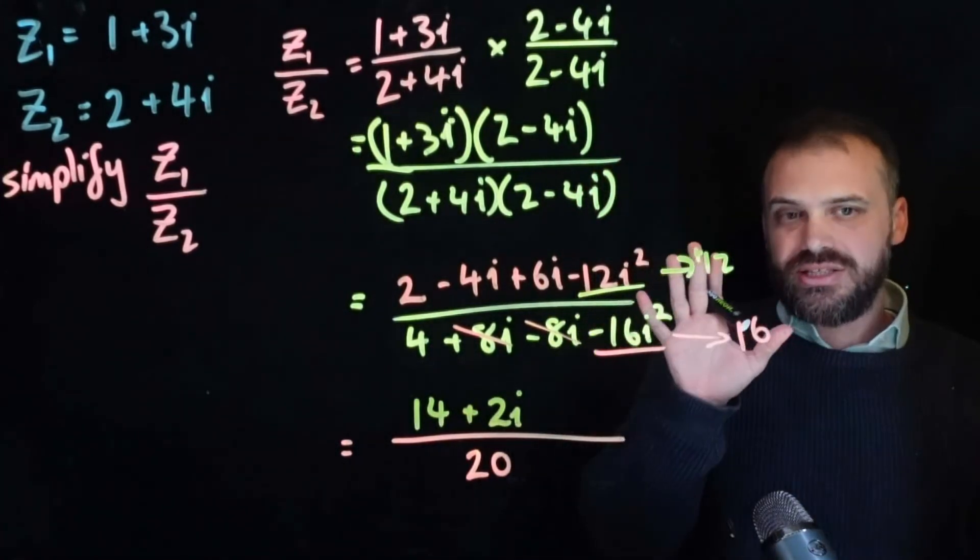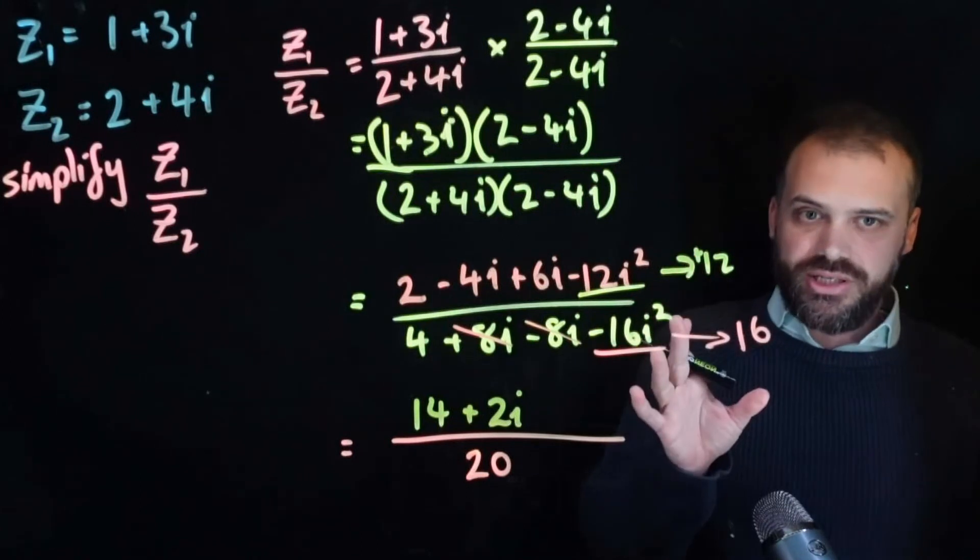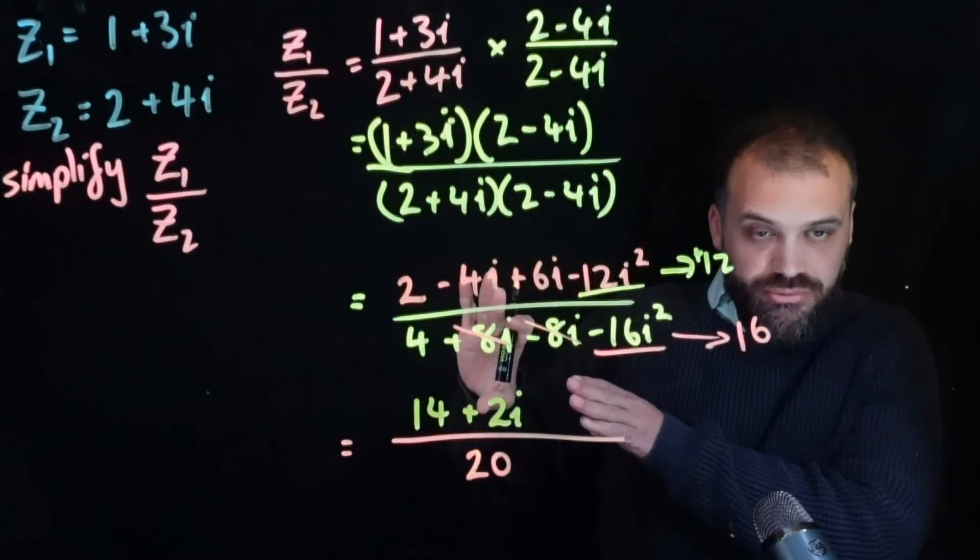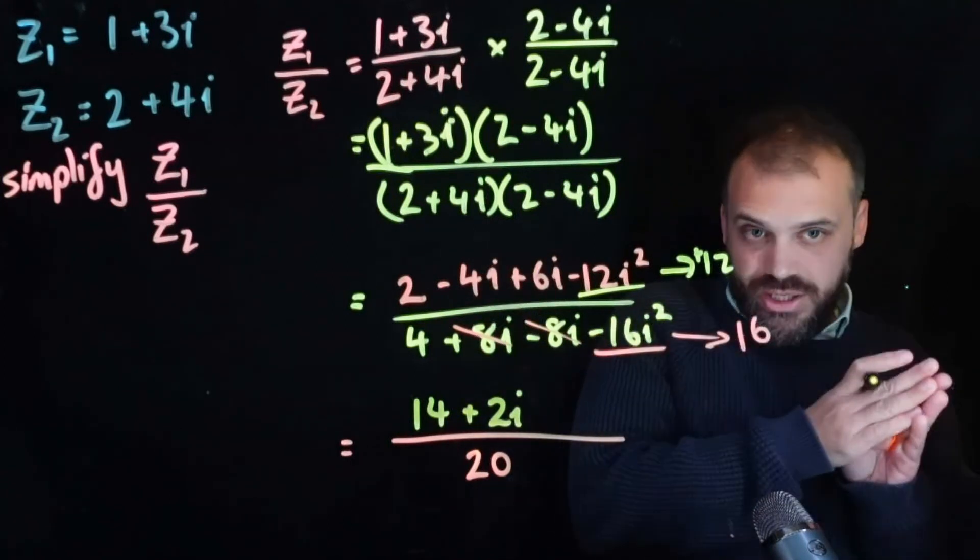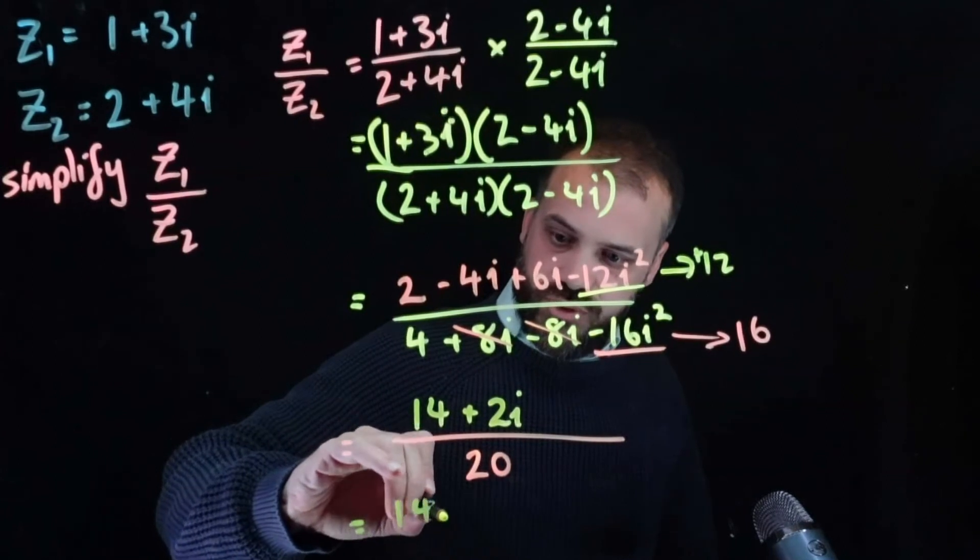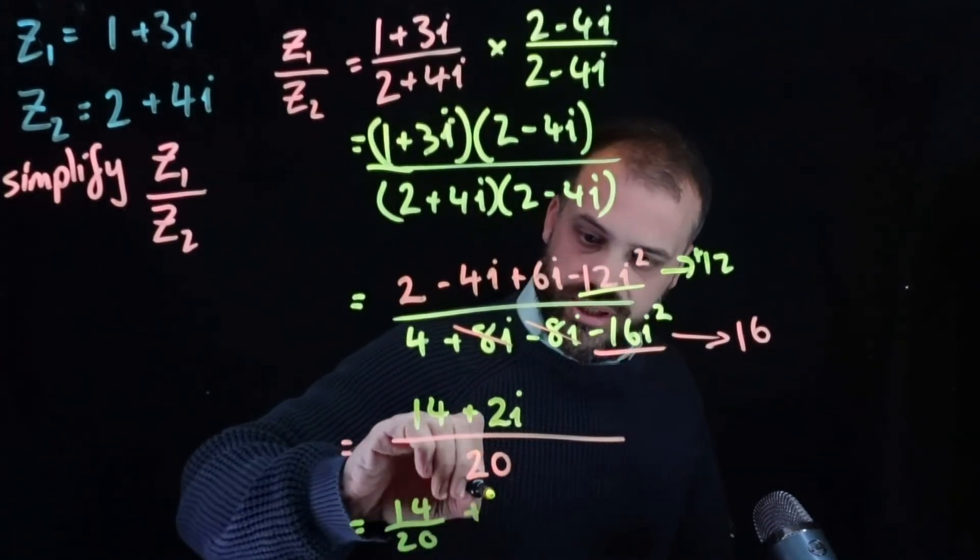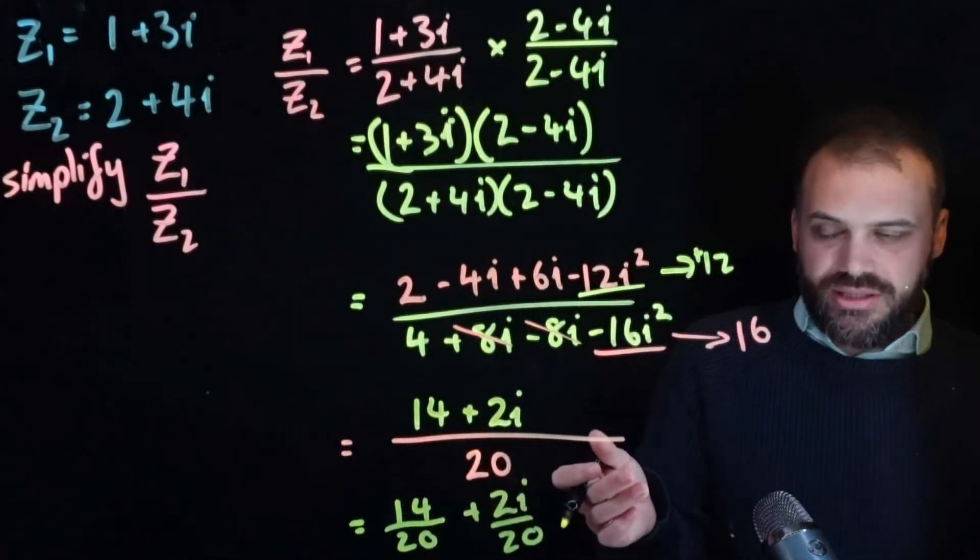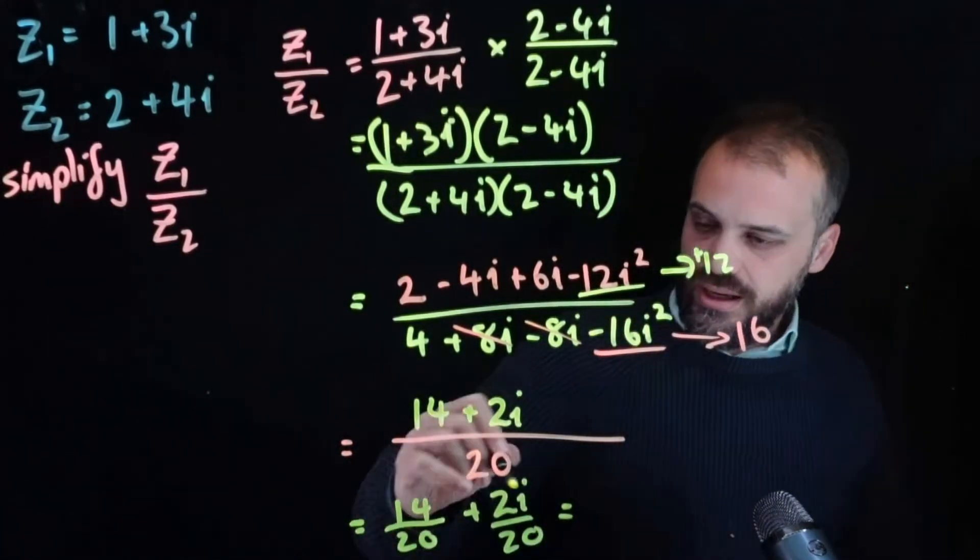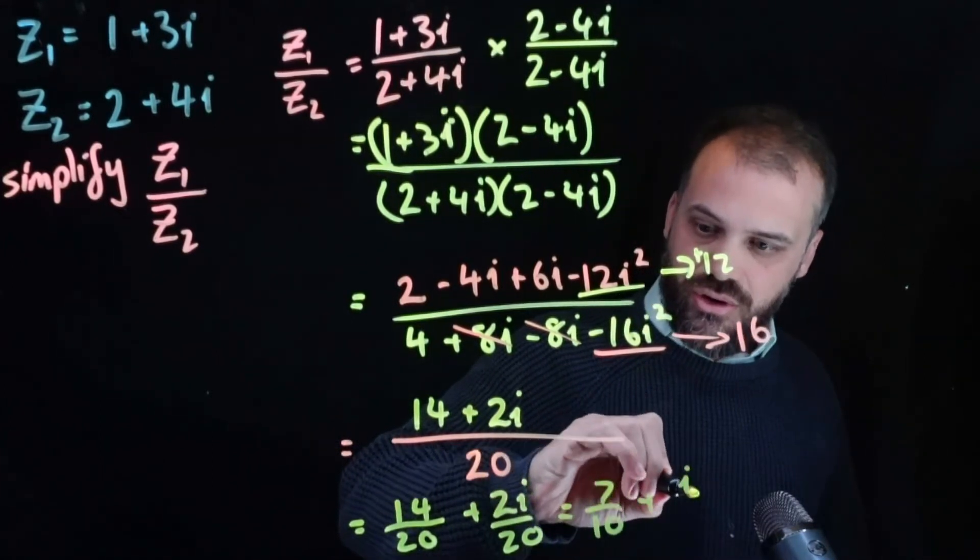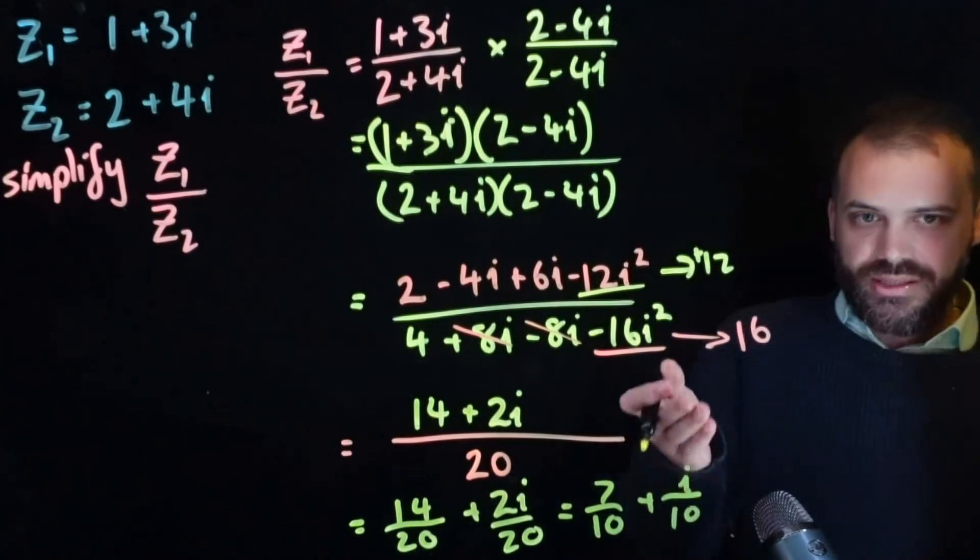Okay, we're pretty much finished here. It's considered polite when you're dealing with this to write it in a purely real component and a purely imaginary component. So, this can be written as 14 over 20 plus 2i over 20. And hopefully, you're seeing that that can be simplified further. 7 over 10 plus i over 10.